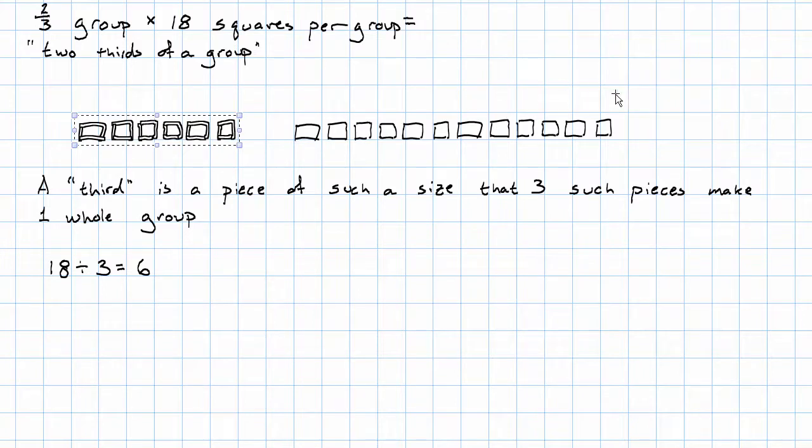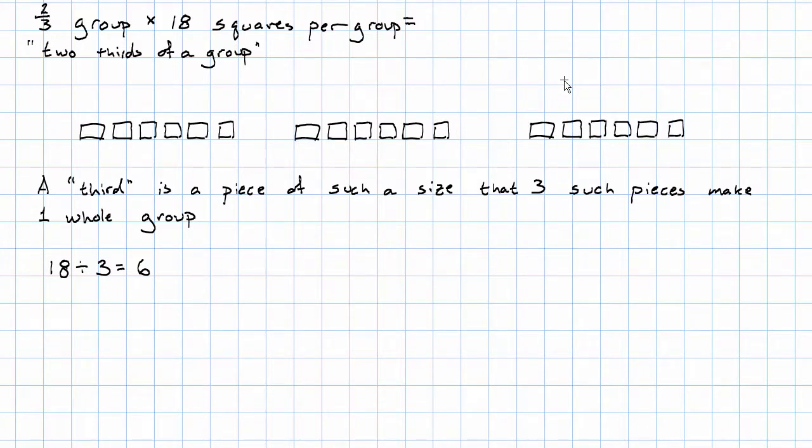So six squares are one third. Another six squares are another third. And the third six squares are the third third, right? Each of those groups of six squares is a third of the original group.